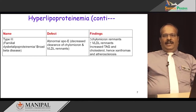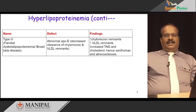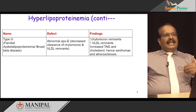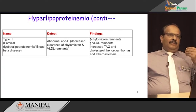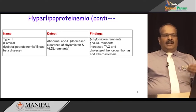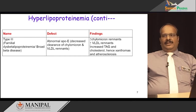Type 3 is familial dysbetalipoproteinemia, also known as broad beta disease. The defect here is abnormal ApoE, leading to decreased clearance of chylomicron and VLDL remnants. ApoE receptors present in the liver are responsible for internalization of these remnants. With impaired internalization, remnant chylomicrons and remnant VLDL accumulate in the circulation. Clinical findings include increased chylomicron remnants, increased VLDL remnants, increased triacylglycerol and cholesterol. Xanthomas and atherosclerosis are major complications.